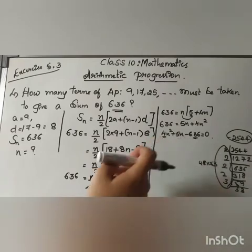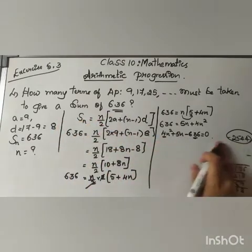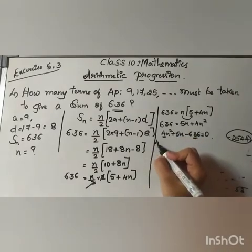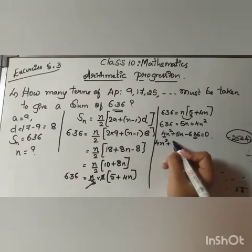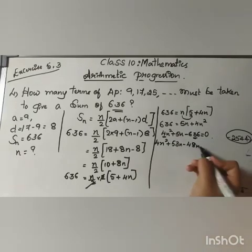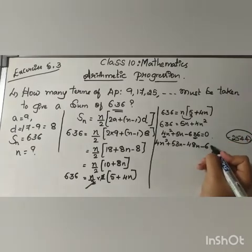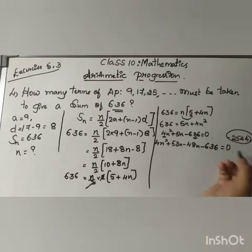So the simplification I can do is 4n square plus 53n minus 48n, because positive 5n is there, so minus 636 equals 0.